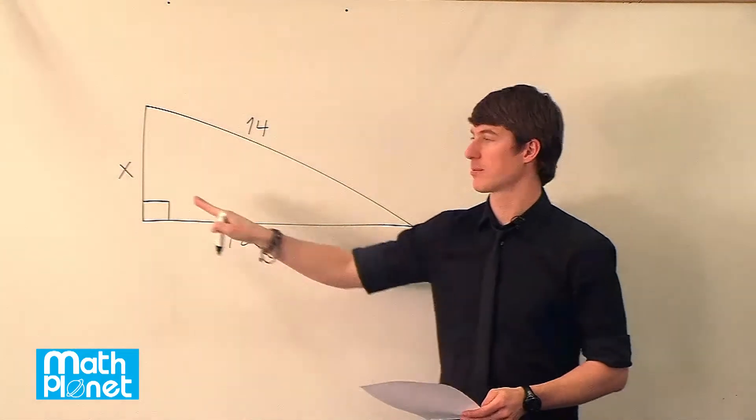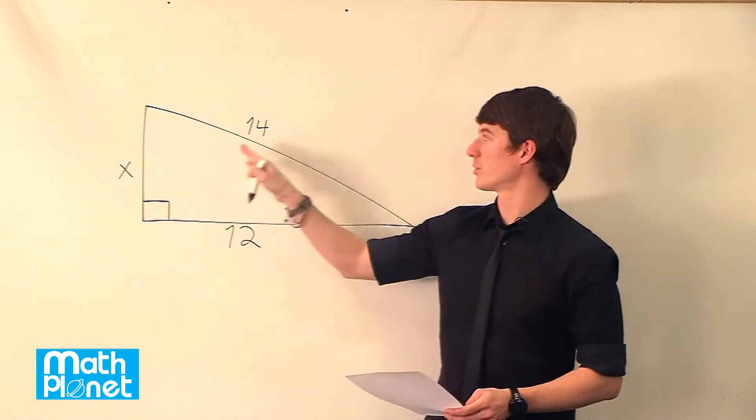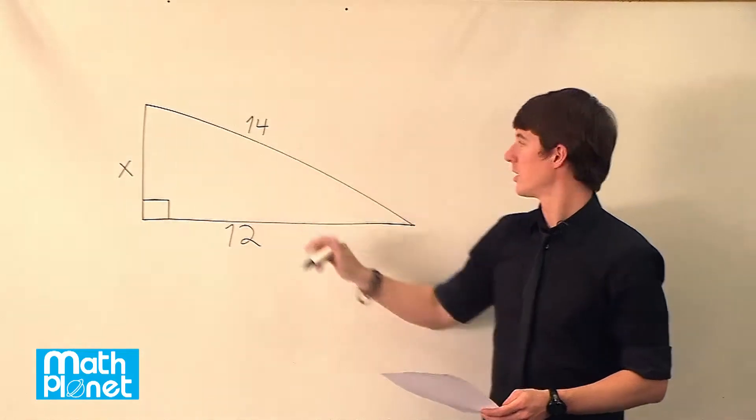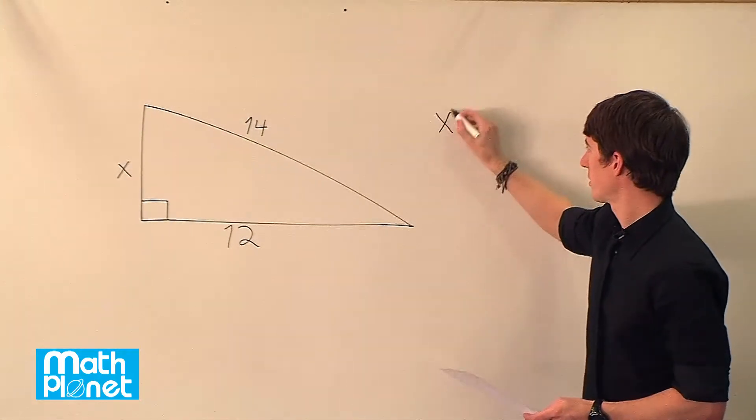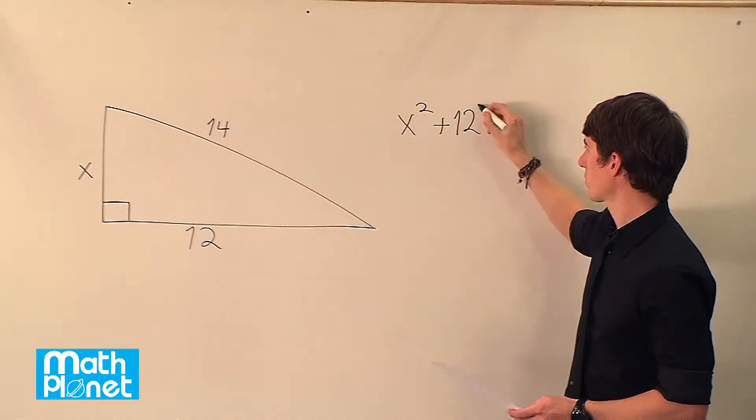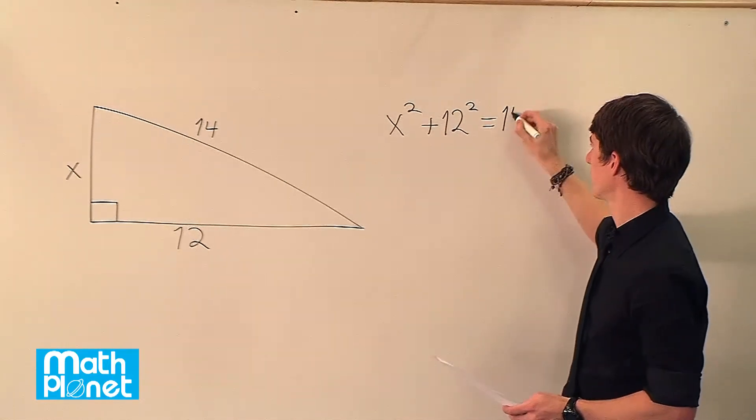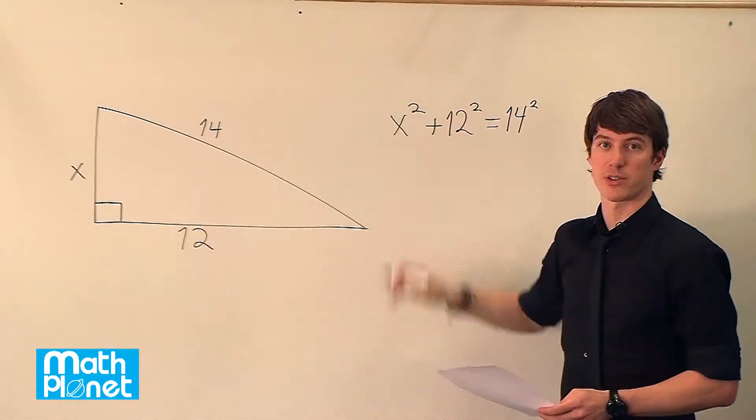So we need the square of this side plus the square of this side is equal to the square of this hypotenuse. So, x squared plus 12 squared equals 14 squared. And we're just going to solve for x.